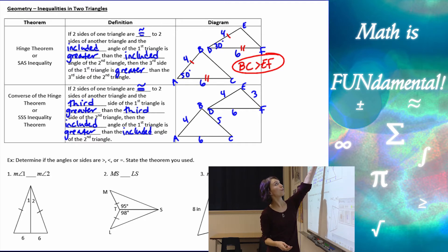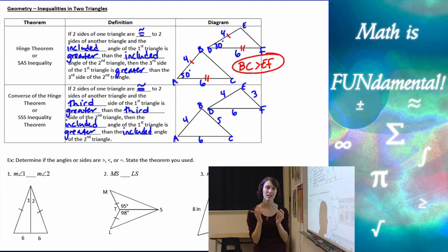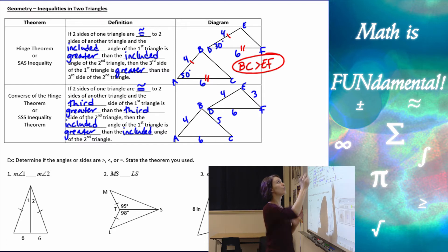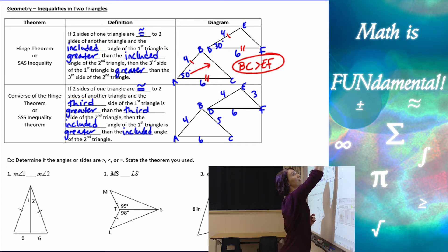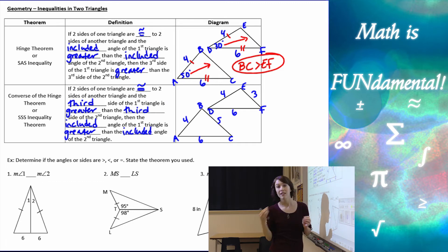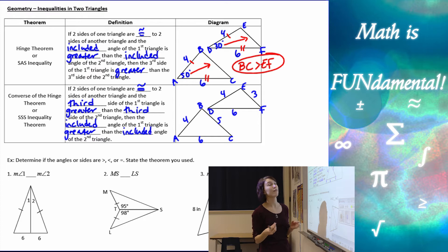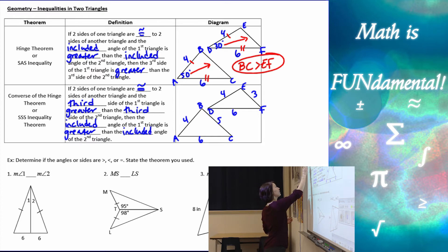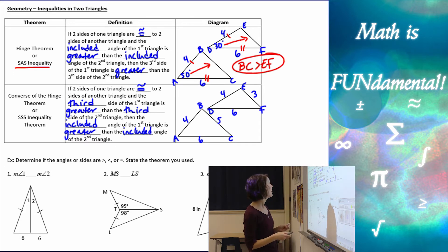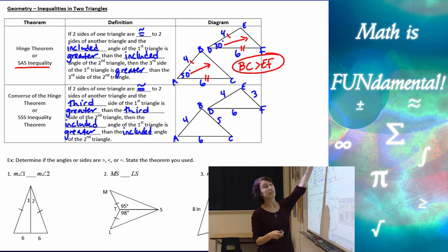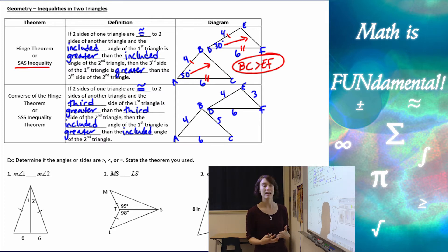So the hinge theorem tells us: if we have those two congruent sides, we can look at the size of the included angle between those two sides and use that to determine the size relationship between the third sides. This is also known as the side-angle-side inequality theorem because we're given two sides with the angle in between, and it's an inequality because they're not equal in this case.